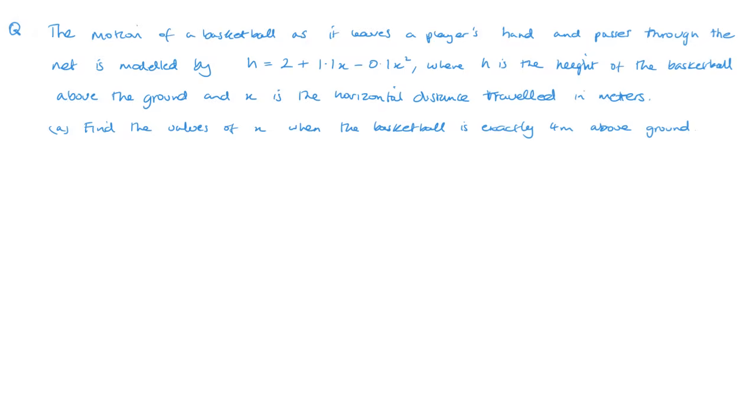So the first one is find the values of x for when the basketball is exactly 4 meters above the ground. So that means that 4 equals 2 plus 1.1x minus 0.1x squared. Or, taking everything to the left, 0.1x squared minus 1.1x plus 2 equals 0. Then, multiplying through by 10, we get x squared minus 11x plus 20 equals 0.